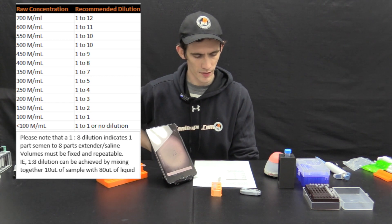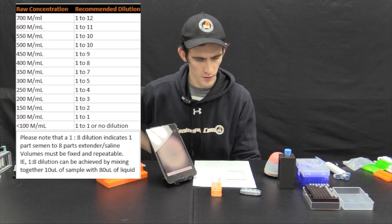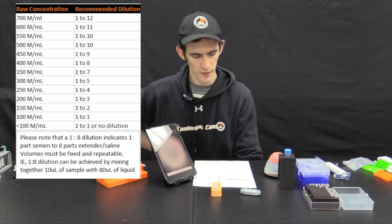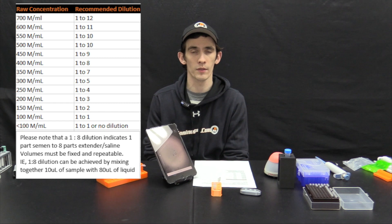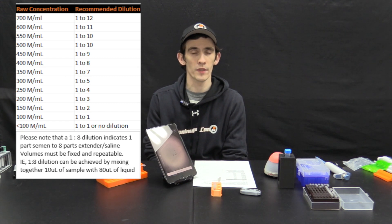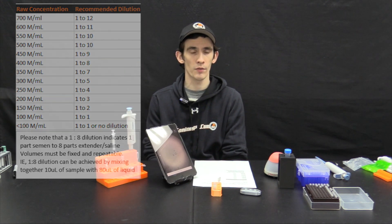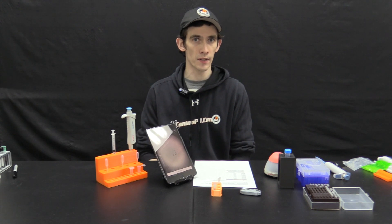Again, keep in mind this is eleven total parts, one part raw semen, ten part extender. You may also use saline for this dilution but typically any extender will work great. Make sure the extender and the semen are at the same temperature to avoid thermal shock as this can kill off your semen and lead to a lower motility and progressive motility than truly expected.